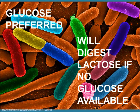An operon regulates the process of building a protein by turning genes on or off, depending on if they're needed. A well studied example of an operon is the lac operon. In E. coli bacteria, the lac operon turns on the building of enzymes necessary to metabolize lactose whenever there is an absence of glucose, the preferred energy source.